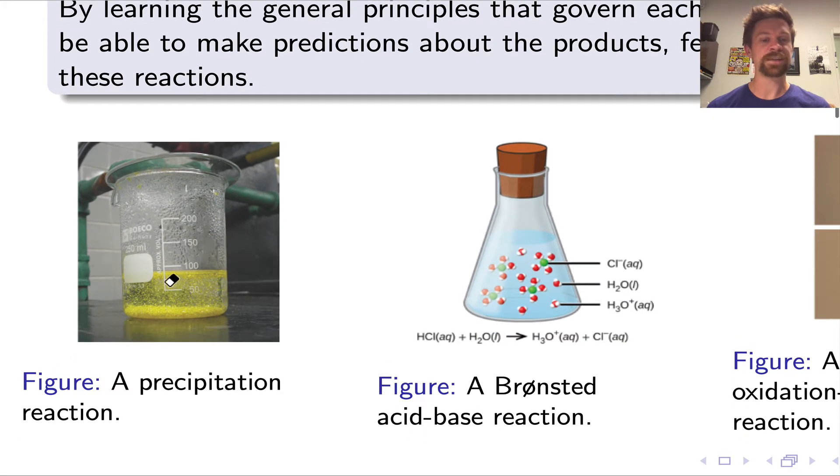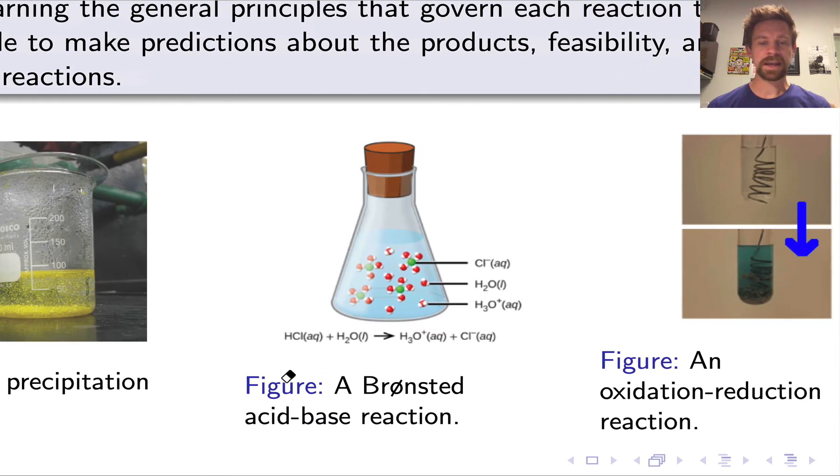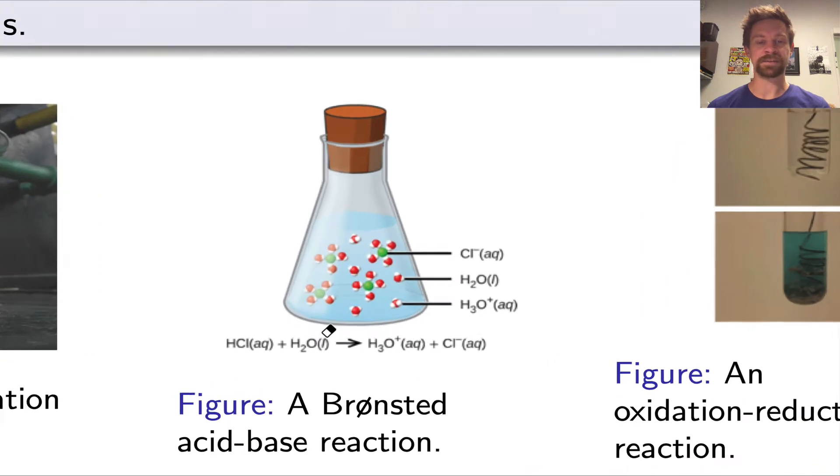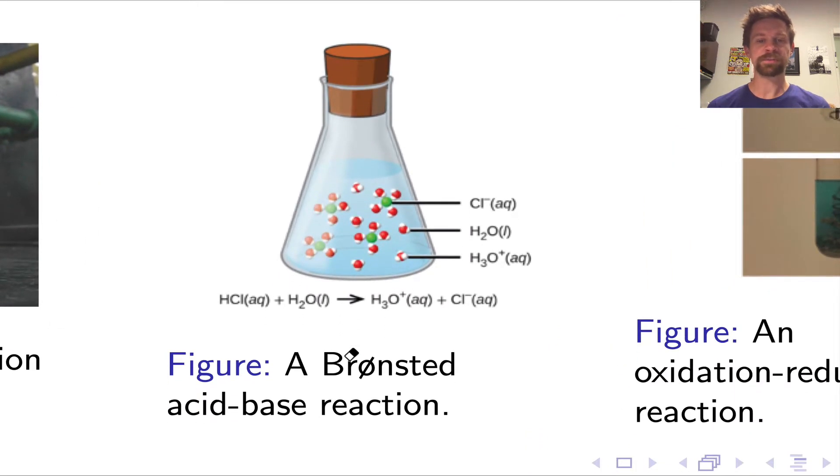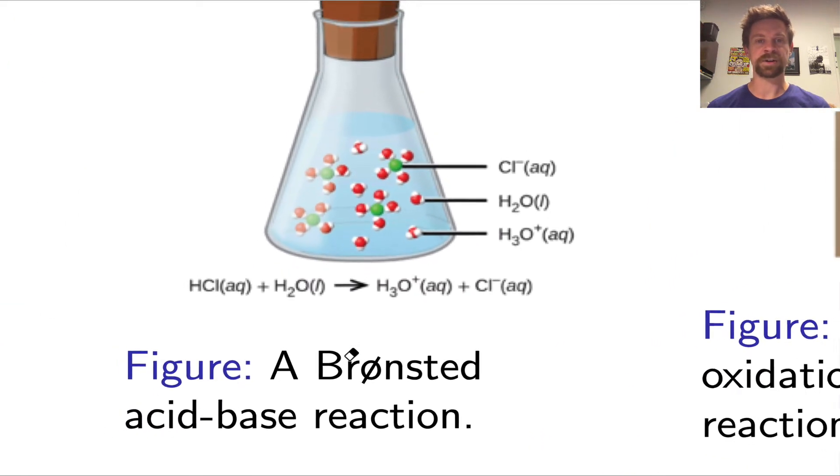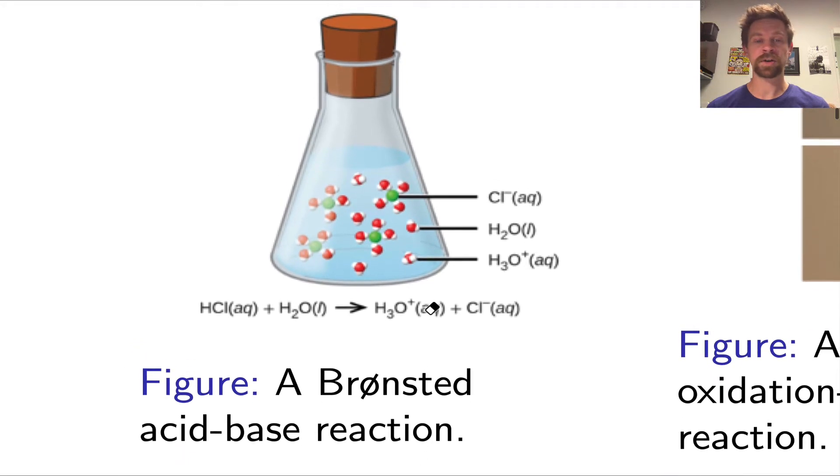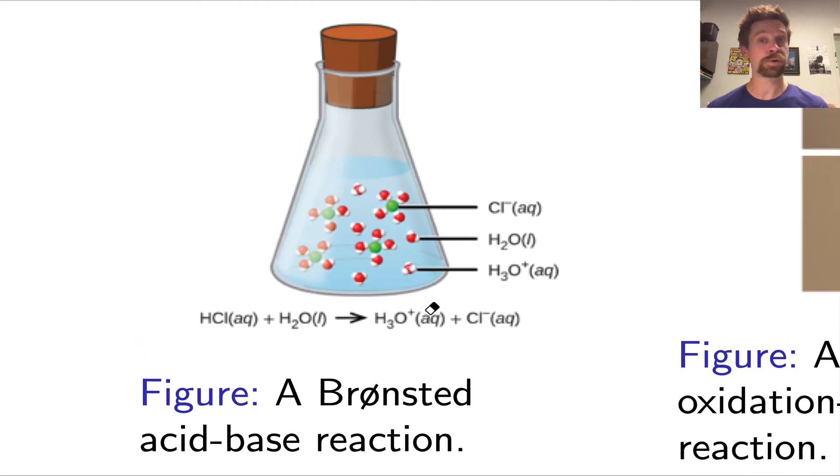First on the left, we have a precipitation reaction, which is a reaction in which solid is formed from liquid reactants, often aqueous solutions. That's what defines precipitation. In the center, we have a Bronsted acid-base process, which is really defined by the nature of chemical change and the transfer of a proton, H+, from one molecule to another.